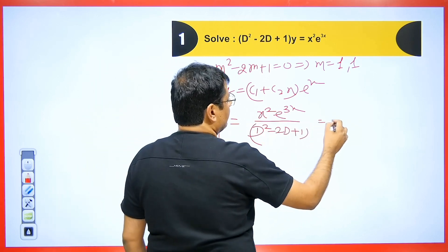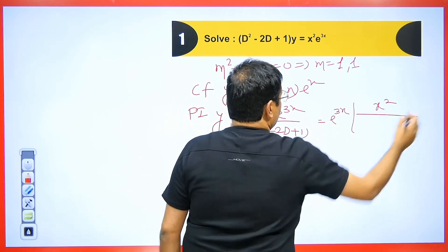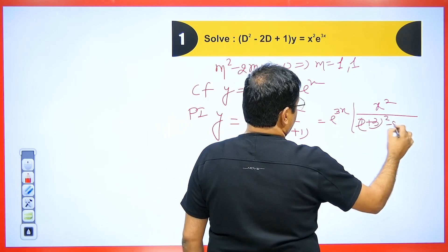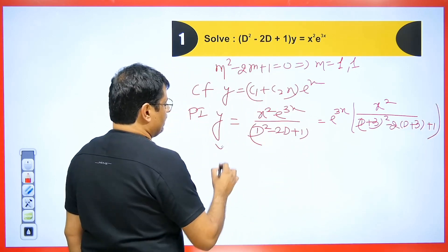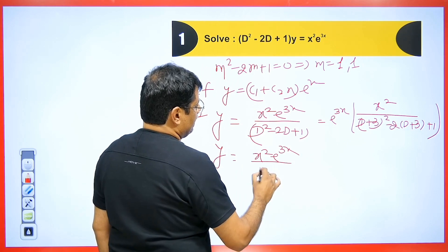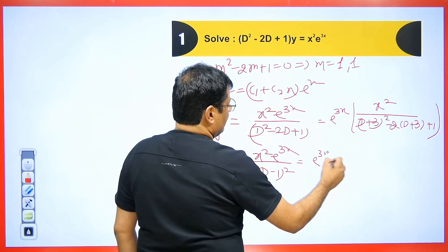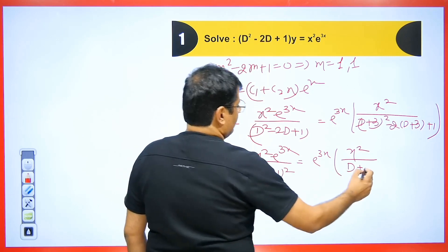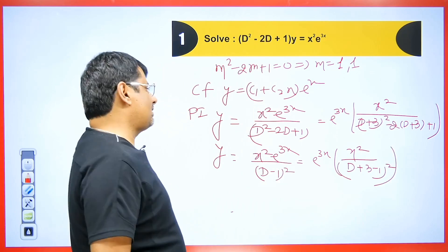For the PI, we have x squared e to the power 3x divided by D squared minus 2D plus 1. We take e to the power 3x outside, meaning we take its particular integral, and in the denominator, wherever we have D, we replace it with D plus 3. We have minus 2 times D plus 3, plus 1. Alternatively, we can write it as x squared times e to the power 3x with the whole square of D plus 3 minus 1. Both approaches are equivalent.